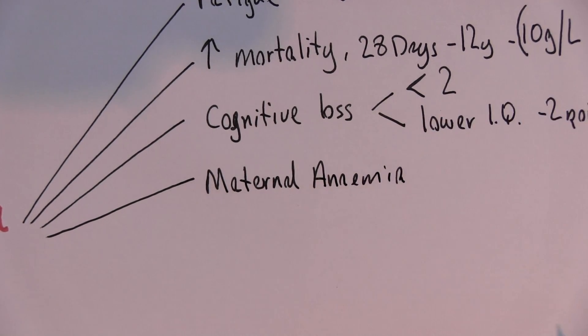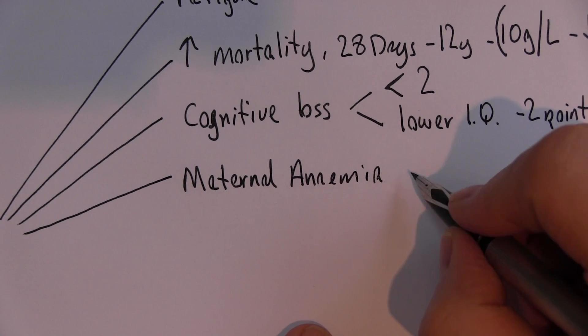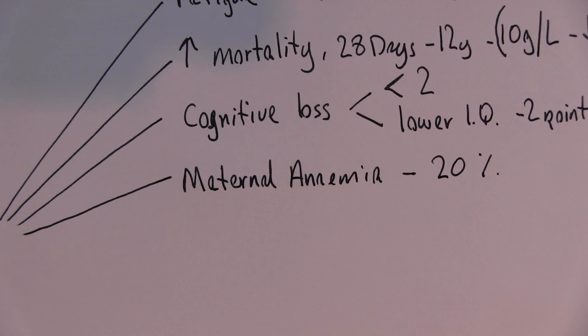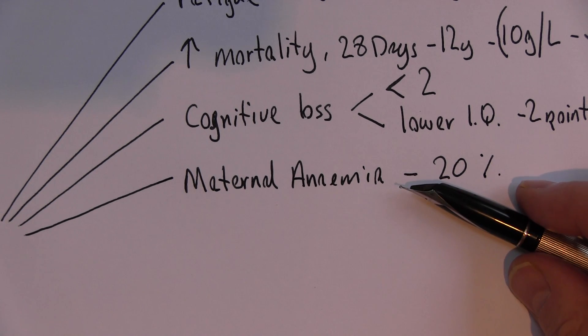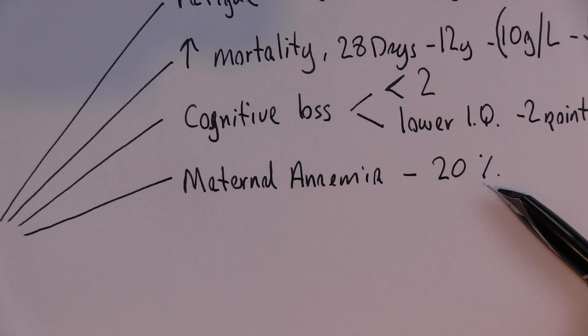If mothers are anemic, this is associated with 20% of maternal deaths. So where the mother dies in the perinatal period, 20% of those are going to be anemic. And in some areas, studies in parts of India for example, that figure rises to 40%.